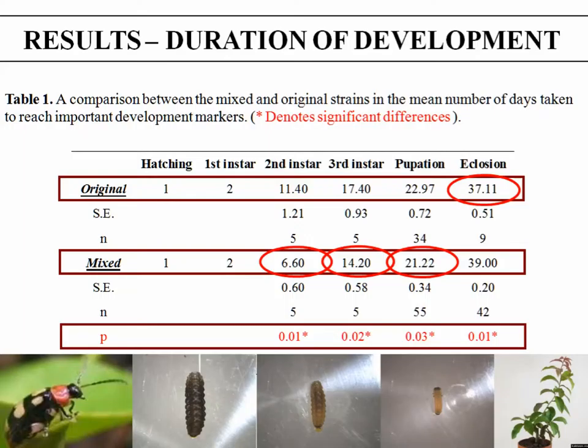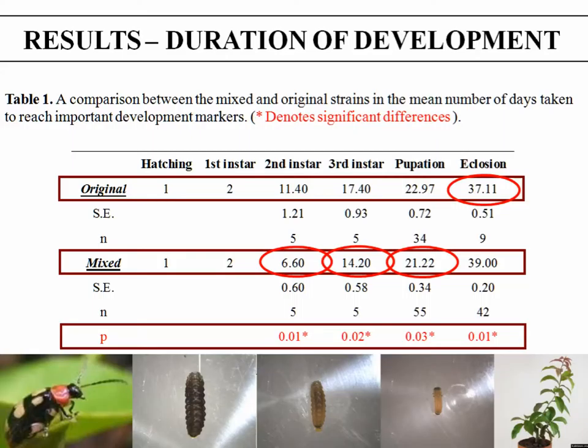The results were actually quite astounding. The mixed population, with higher genetic diversity, reaches the second instar, the third instar, and enters pupation sooner than the original population which has less genetic diversity. We alluded to protandrous eclosion earlier, and that is one reason we can use to explain why the original population would reach eclosion sooner than the mixed population, as the mixed population actually has a female-sex-biased ratio. All of these results were also deemed to be statistically significant.